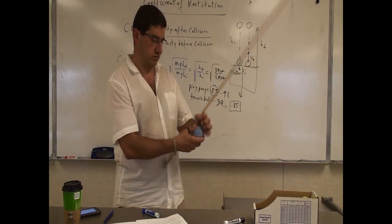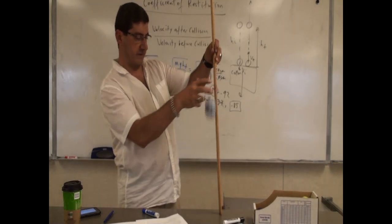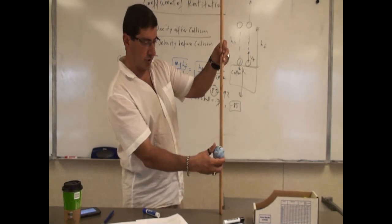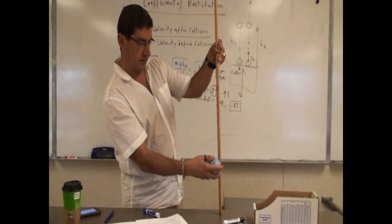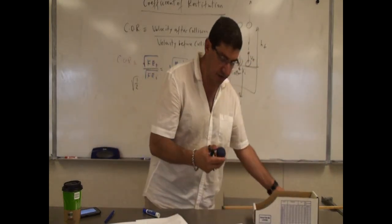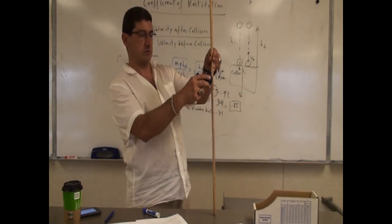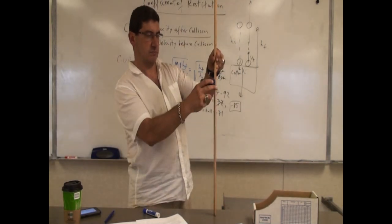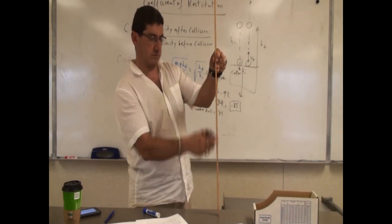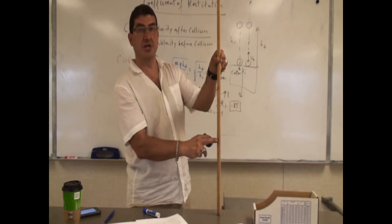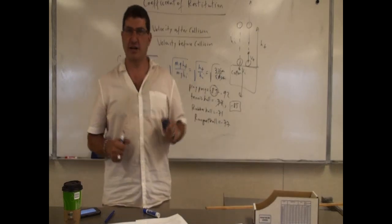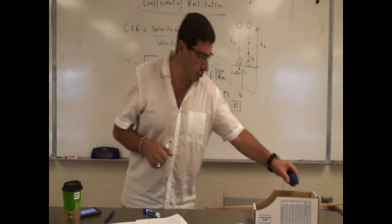The rubber ball dropped from 50 goes to about 25 centimeters. Next, an old racket ball dropped from 50 goes up to about 30 centimeters. That's also probably not good for a racket ball — it needs a higher coefficient of restitution.